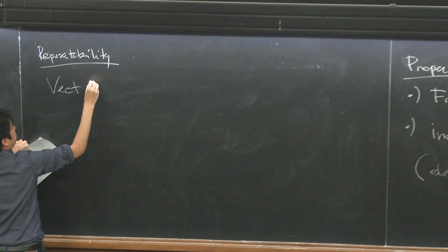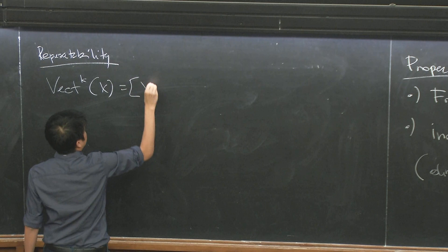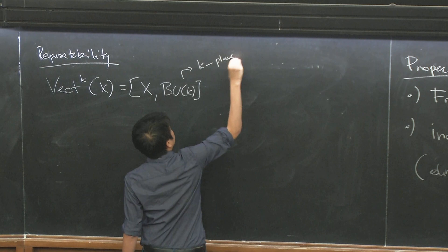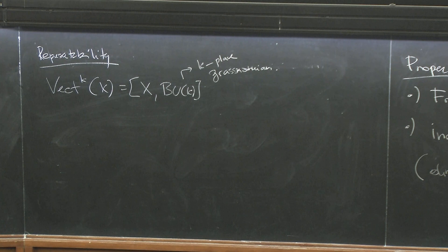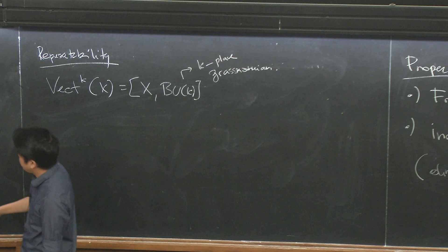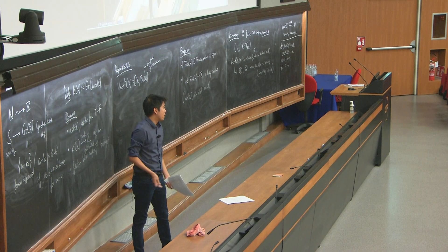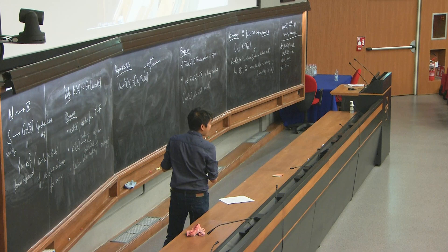Rank-k vector bundles are represented by the Grassmannian. For K-theory, a basic fact is that if you have a vector bundle E over X, then there exists another vector bundle such that their direct sum is trivial. This implies that any element A in K(X) can be represented as F minus a trivial bundle. So K(X) is the same as homotopy classes of maps from X to BU × ℤ, where BU is the union of all the Grassmannians.